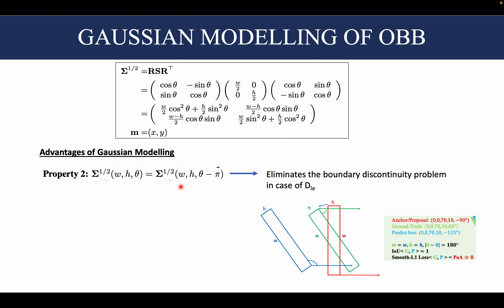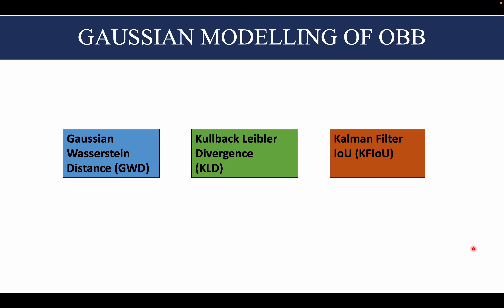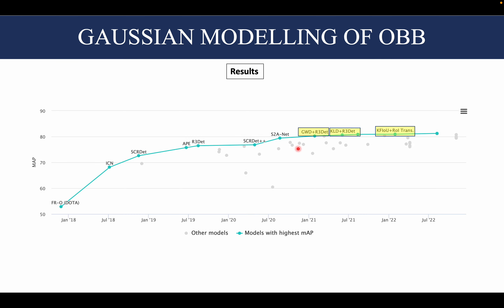The second property is that keeping width and height the same but introducing an angle difference of 180 degrees still gives equivalent covariance matrices. This eliminates the boundary discontinuity problem seen in the long-edge definition, where an anti-clockwise rotation of 180 degrees caused the loss to become very high. Using these properties, various loss metrics based on Gaussian modeling have been designed — such as the Gaussian Wasserstein distance, KL divergence, and KFIoU — for rotated object detection, and these are the leading benchmarks currently in rotated object detection.